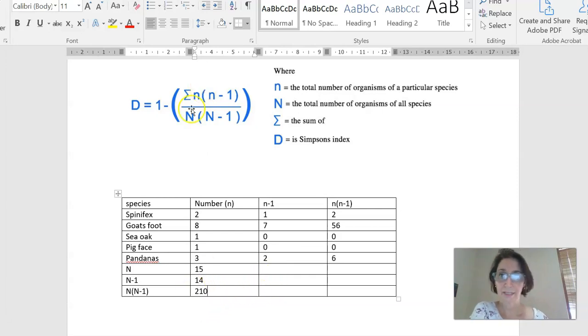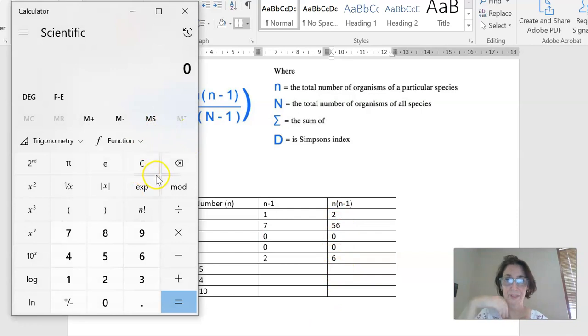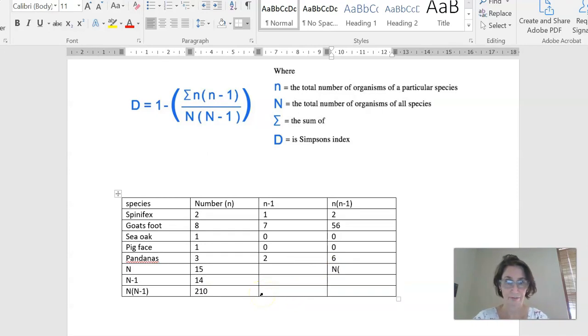Okay, so I've got a couple of different numbers here. This 210 is actually going to be the denominator of the fraction. And we just need to work out what is the numerator of the fraction. If we look over here, in the legend, it says that this funny symbol here, which is a Greek letter sigma, it means the sum of. So I actually need to work out the sum of all the n times n minus 1. So that means the sum of this column here. So I'm going to add these up here using my calculator again. So I've got 2 plus 56 plus 0 plus 0 plus 6 equals 64. So the sum of those is 64.